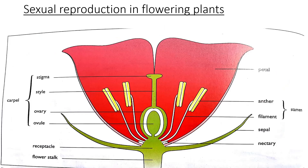Sexual reproduction in flowering plants — plants that have flowers or fruits — means both male and female parts are inside one flower. The carpel is the female reproductive system and the stamen is the male reproductive system. A memory tip: 'stamen' ends in 'man,' so it's male. The outer parts are the petal, sepal, and nectary. Inside the stamen we have the anther and filament. Inside the carpel we have the stigma, style, ovary, and ovule.